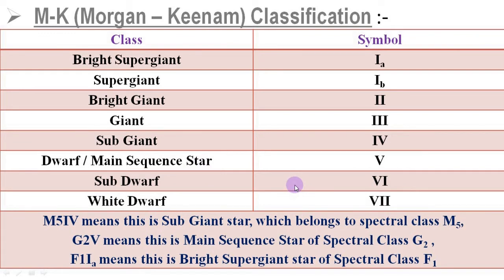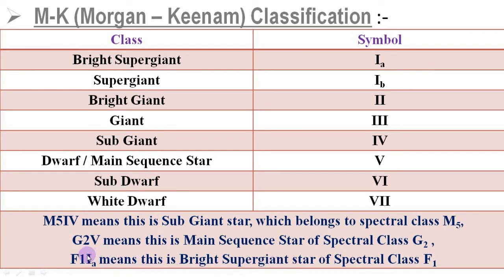Here are some examples of how a star can be specified. M5 IV means this is a subgiant star (Roman IV) belonging to spectral class M5. G2 V means main sequence star (Roman V) with spectral class G2 — this is the representation of the Sun. F1 Ia means this is a bright supergiant star (Roman Ia) with spectral class F1. By this way, a star is specified.